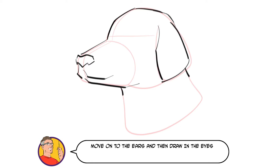Move on to the ears and then draw in the eyes which aren't dissimilar to human eyes and the way they're constructed. Add some dots between the nose and the mouth. Finish things off with a collar.